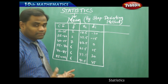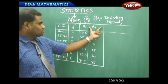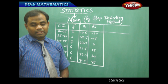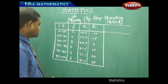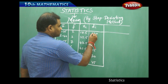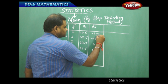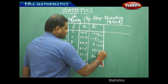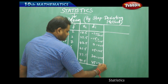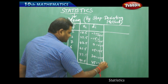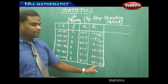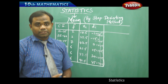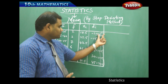As we can see from the previous problem, we calculated the deviations using the assumed mean method as Di: minus 30, minus 15, 0, 15, 30, and 45. Each of these can be written as multiples of 15: negative 2×15, negative 1×15, 0×15, 1×15, 2×15, and 3×15. Since all deviation values are multiples of the common factor 15, we can use the step deviation method.